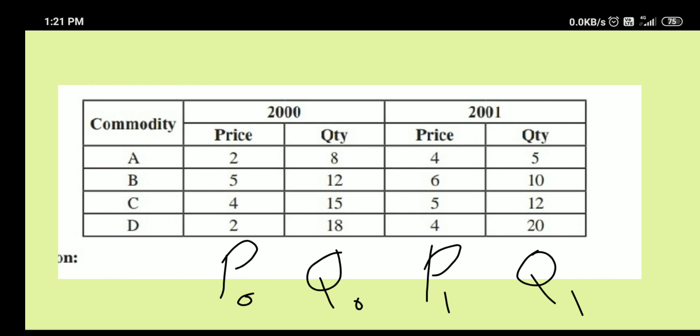In the year 2000, they have given price which you should be taking as base year because it is the oldest year, and 2001 is the latest one. Always the latest year should be taken as current year. Current year's price is P1 and base year's price is represented by P0. On the other hand, base year quantity is Q0 and current year quantity is Q1.